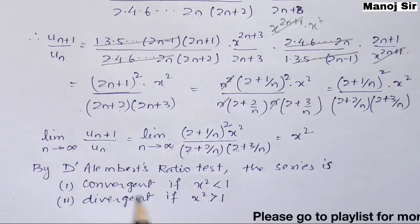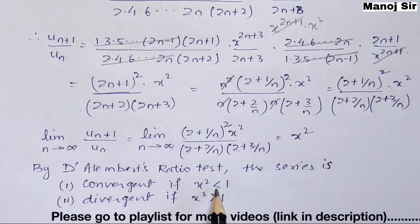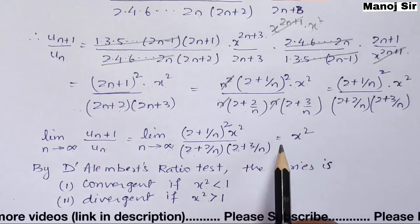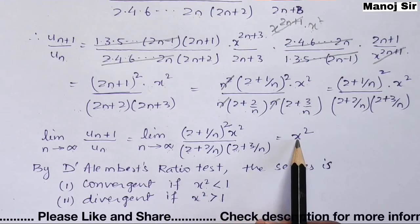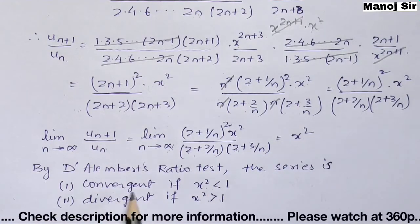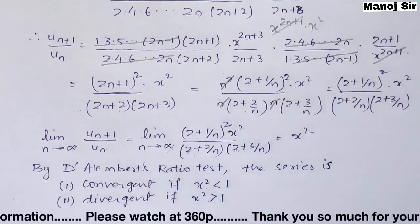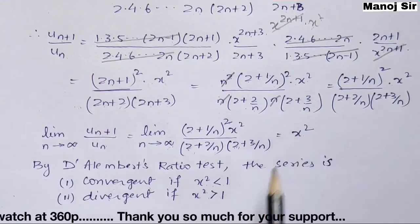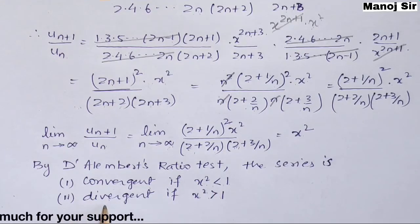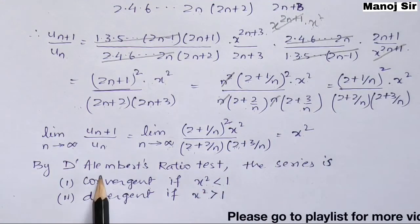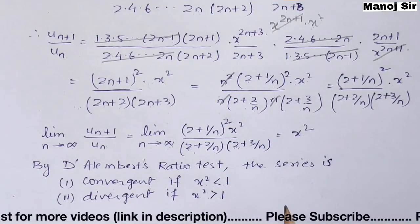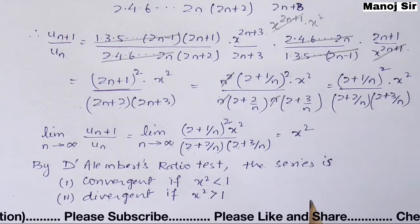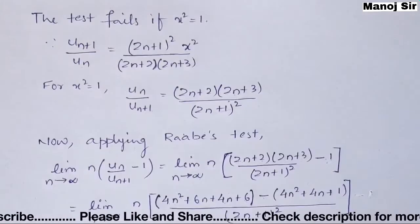According to D'Alembert's ratio test: the series is convergent if x² < 1, divergent if x² > 1, but the test fails when x² = 1. In that case we take the help of Raabe's test.